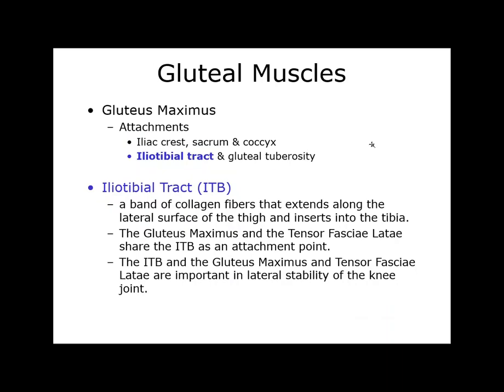The attachment points for the gluteus maximus include the iliac crest down around the sacrum and the coccyx, inserting into the iliotibial tract — the IT band — and the gluteal tuberosity on the femur. The IT band is a band of collagen fibers, super stiff. If you're going to roll anything, focus on muscles; I would focus on strengthening or lengthening muscles. Rolling this stiff piece of collagen seems a little futile.